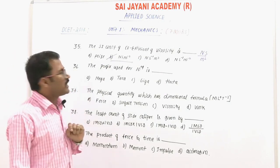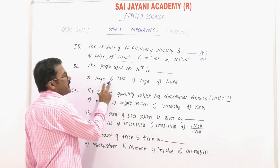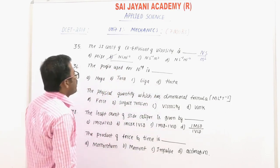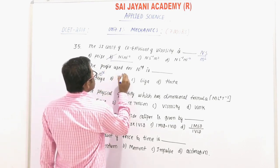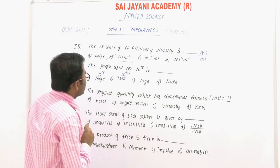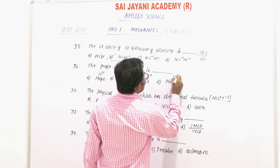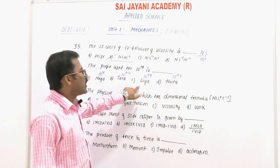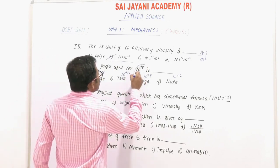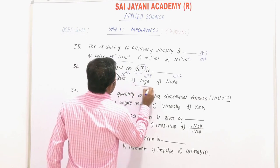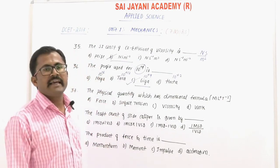Question number 36: the prefix used for 10 to the power +9 is — option A: mega, option B: tera, option C: giga, option D: hecto. Mega = 10⁶, tera = 10¹², giga = 10⁹, hecto = 10². So for 10⁹, the prefix is giga. Option C, giga, is the right answer.